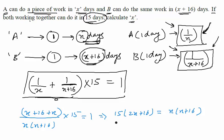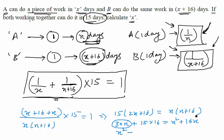Let us simplify further. You will get 30x plus 15×16 equals x² plus 16x. Keeping on solving: x² minus (16x − 30x) leaves minus 14x. Taking the constant quantity to the same side, we get x² − 14x − 240 = 0.